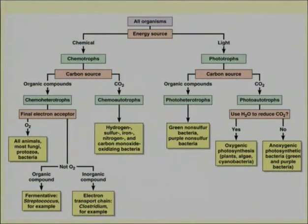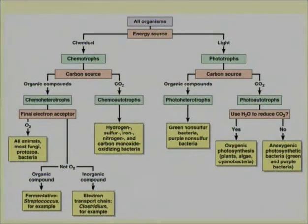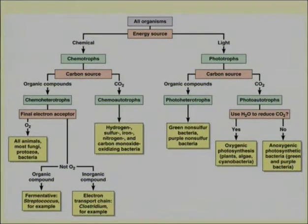Chemotrophs are those which require chemical substances or chemical reactions as their energy source. Now, based on the type of carbon source required for the growth of chemotrophic organisms, they are further divided into two groups: those which require organic carbon or organic compounds, and those which require carbon dioxide as a carbon source — which is the simplest carbon source available on Earth. Those requiring organic compounds as a carbon source are classified as chemo-heterotrophs.